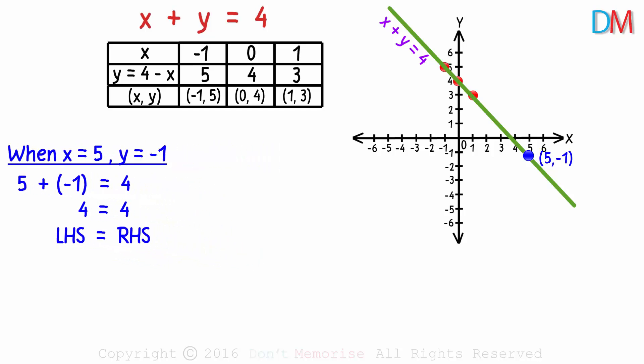Take any random point which does not lie on this line. Say this point. Negative 1 comma 2. It will not be one of the solutions of this equation, as it does not lie on this line. And we can also verify it mathematically. Negative 1 plus 2 is 1 and not 4.